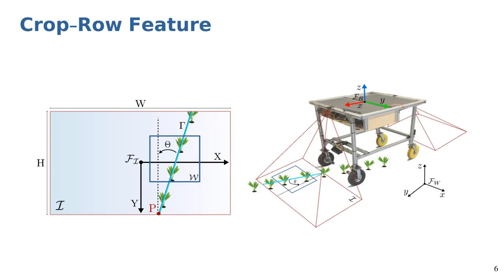We then estimate the path curve along which the robot should navigate by computing the line that best fits all center points using a robust least square fitting method.